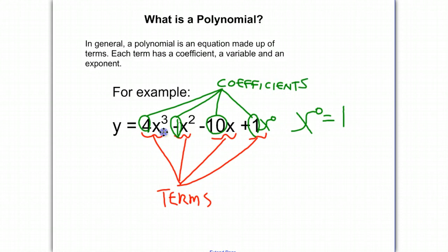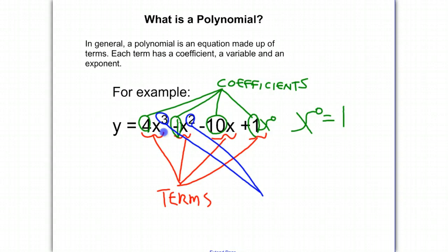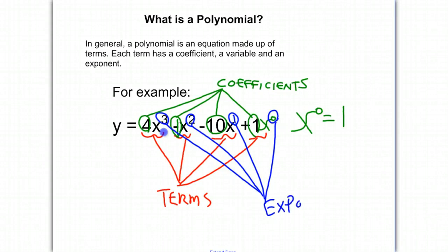The exponents are the superscripts next to the variables. We have a 3 — x to the 3rd power. A 2 is the exponent for x squared. In the case of negative 10x, you don't see an exponent, but it could be considered x to the 1st power, because x to the 1st power is just x. And finally, if we had x to the 0 next to it, 0 would be considered the exponent. Those are all considered the exponents.